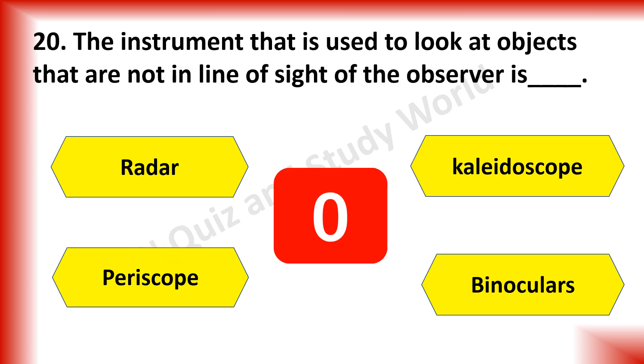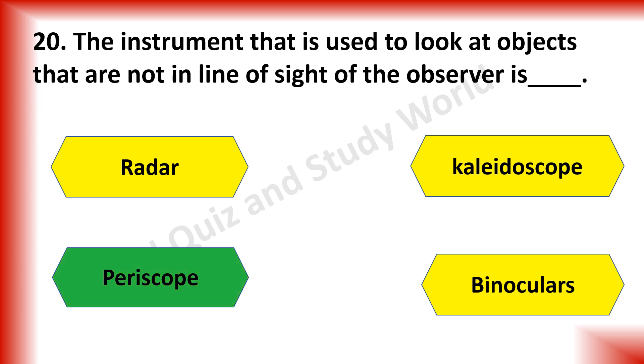What is the instrument that is used to look at objects that are not in line of sight of the observer known as? Is it radar, kaleidoscope, periscope or binoculars? The answer is periscope.